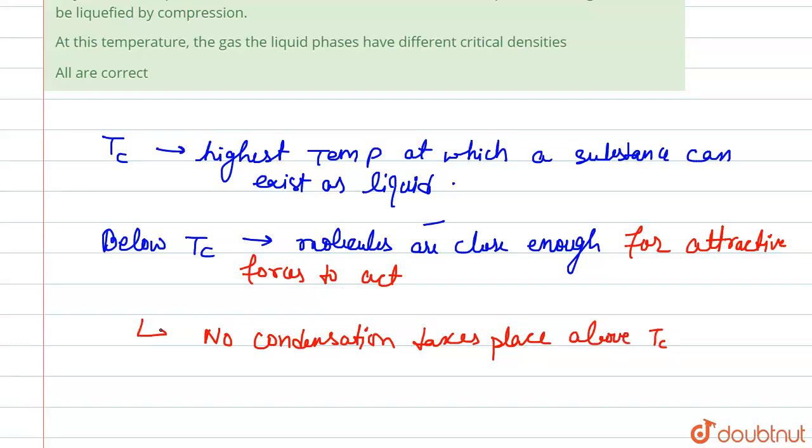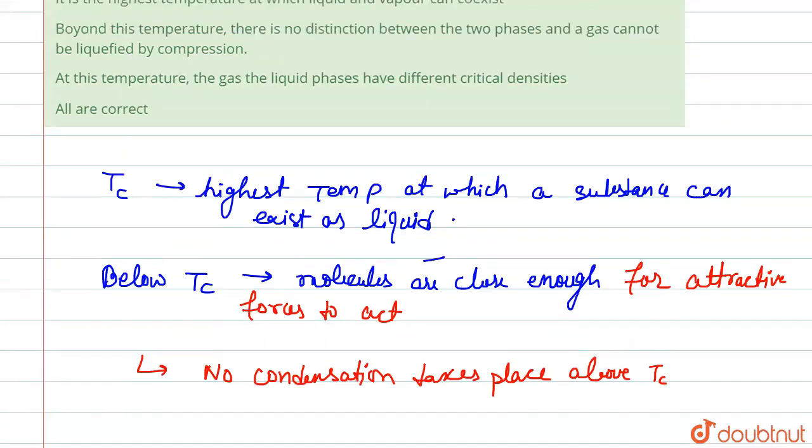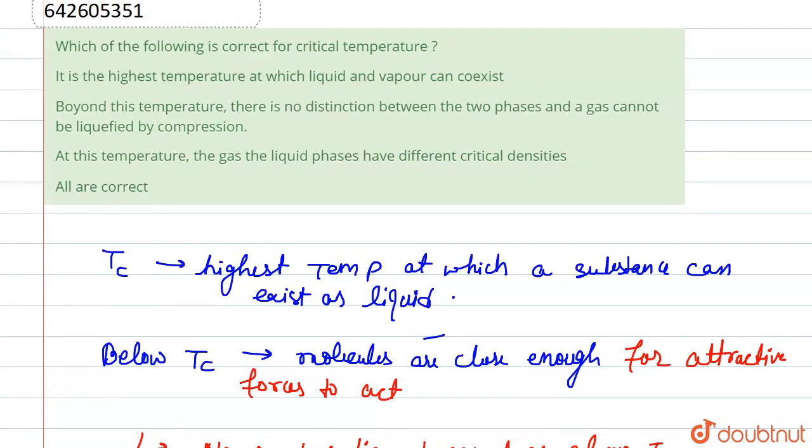So if we look at this statement, we come to the conclusion that first of all, it is the highest temperature at which liquid and vapor can coexist, so option A is correct. Beyond this temperature, there is no distinction between two phases, and gas cannot be liquefied by compression. This is a true statement.